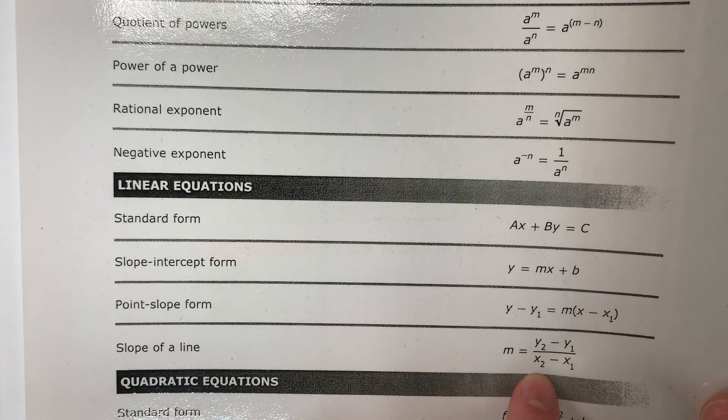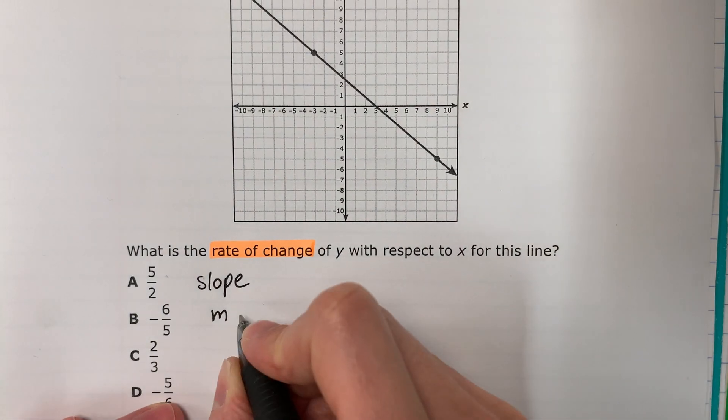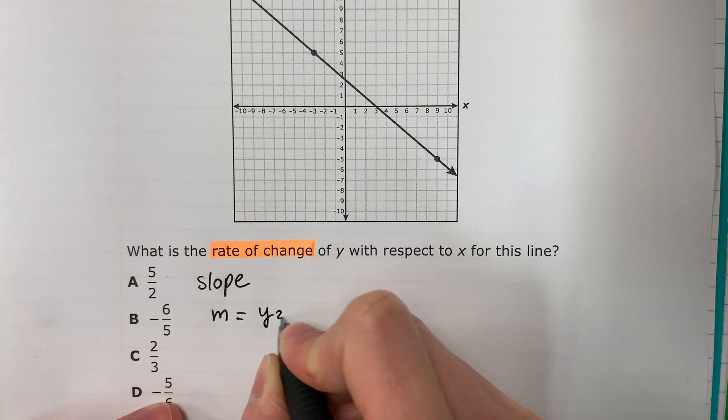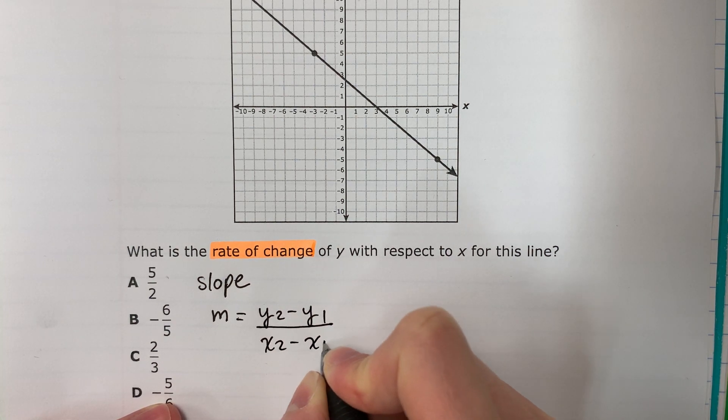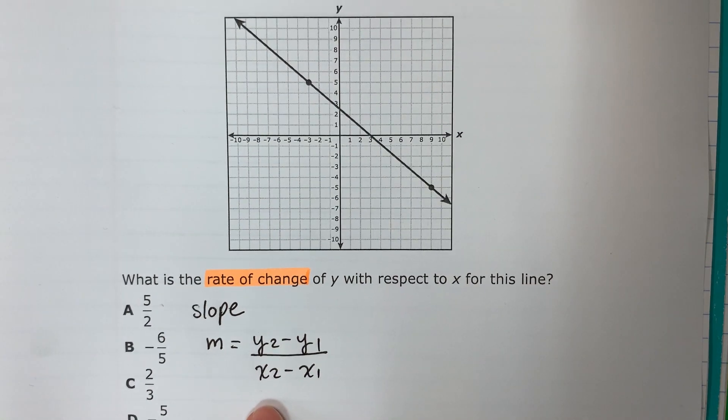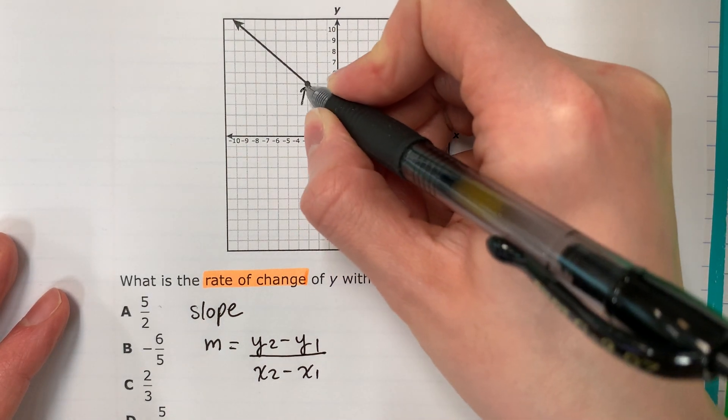M equals y2 minus y1 divided by x2 minus x1. I'm going to write that down. To use this, I need two ordered pairs.